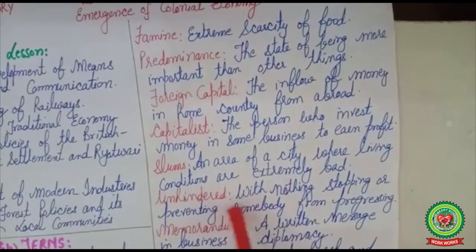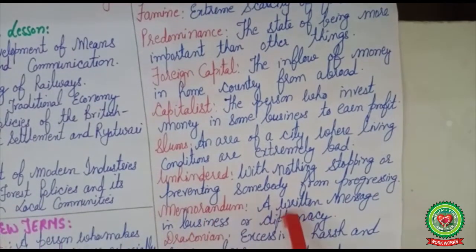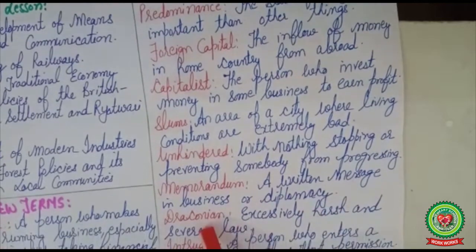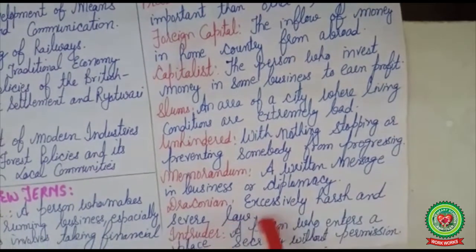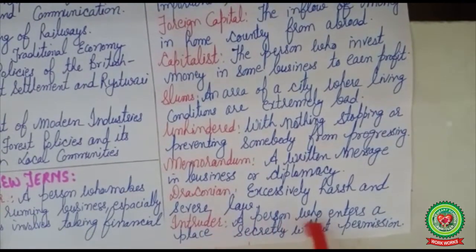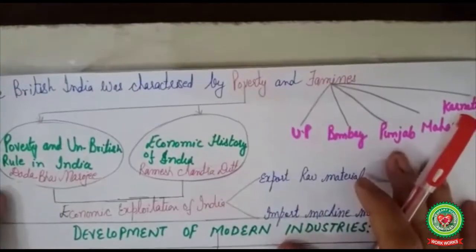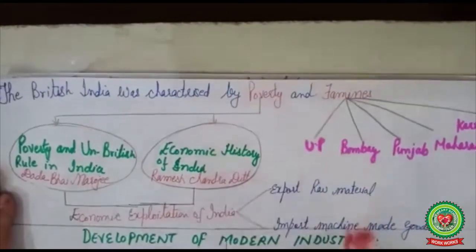Unhindered: with nothing stopping or preventing somebody from progressing. Memorandum: a written message in business or diplomacy. Draconian: excessively harsh and severe law. And the last term is intruder: a person who enters a place secretly without permission.